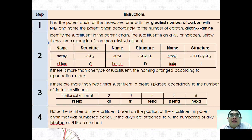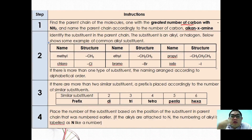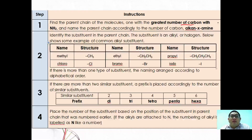For general naming of amines: find the parent chain — the one with the greatest number of carbons bearing the NH₂ group — and name it as alkan-X-amine. Then identify substituents in the parent chain, whether alkyl or halogen. Common alkyl substituent prefixes are: methyl for 1C, ethyl for 2C, propyl for 3C, and so on. If there is more than one type of substituent, arrange naming in alphabetical order.